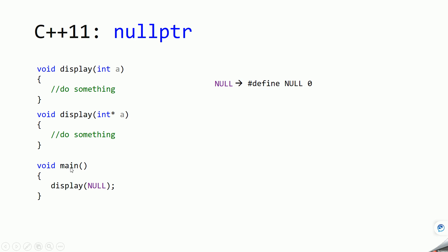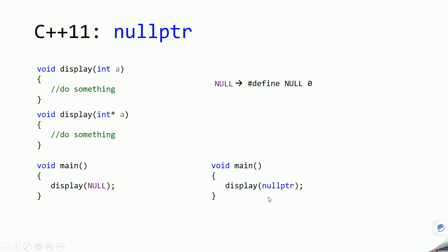Zero will be treated as an integer. So our intention was to call the display function which takes a pointer to an integer by passing a null pointer, but it will instead call the display function which takes an integer. So in C++ before C++11, we don't have a proper null pointer.